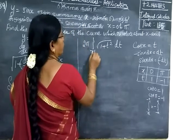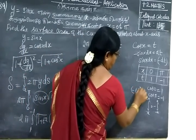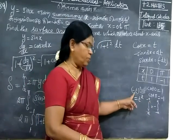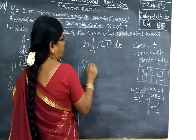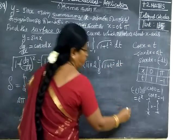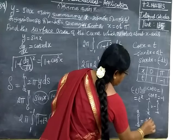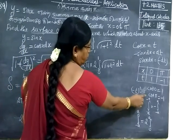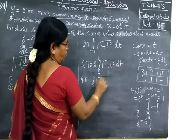If you substitute minus t for t, t squared remains the same, so this is an even function. We know that the integral from minus a to a of an even function equals twice the integral from 0 to a. So this equals 4π times the integral from 0 to 1 of root of 1 plus t² dt.